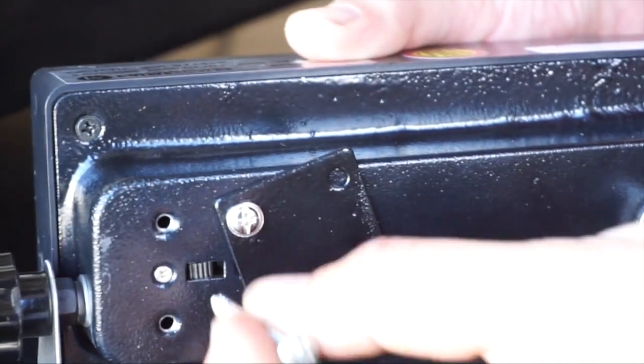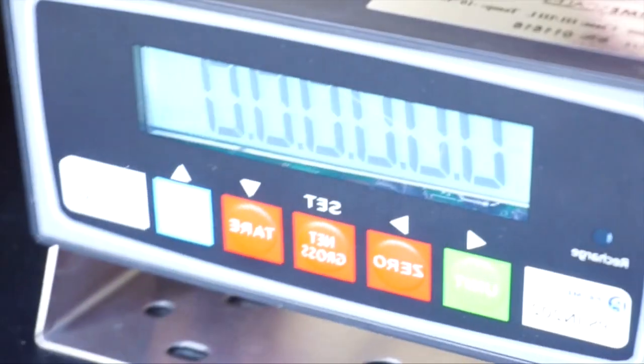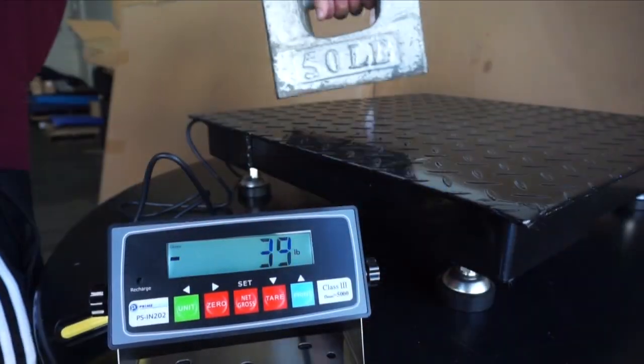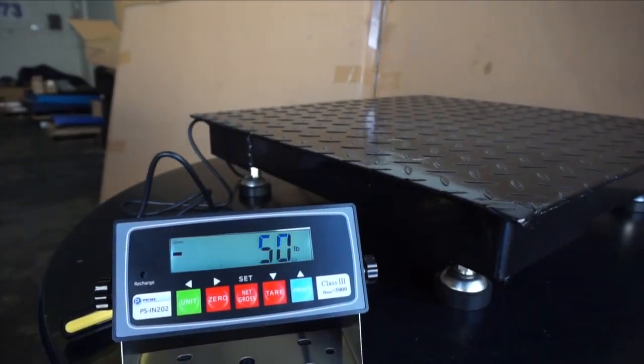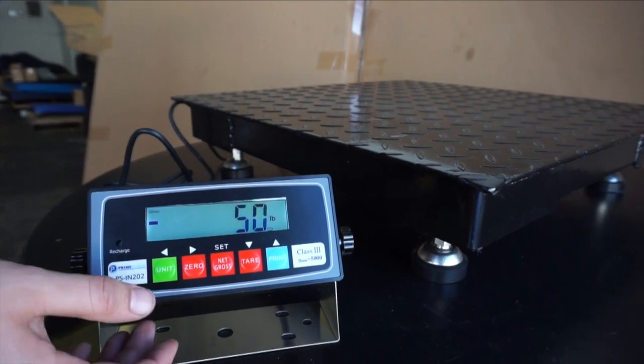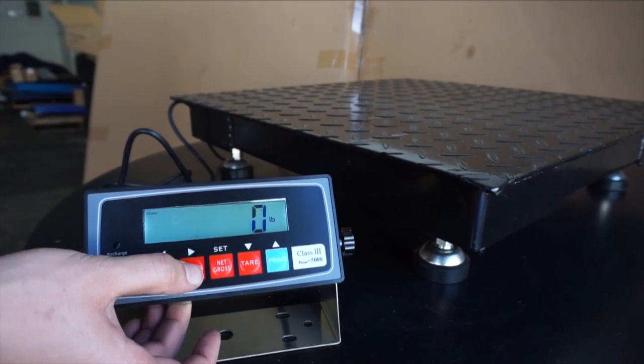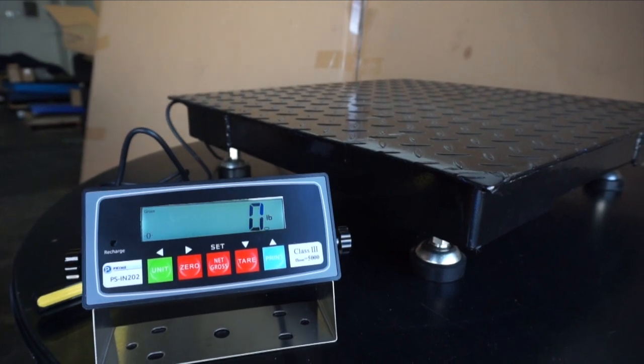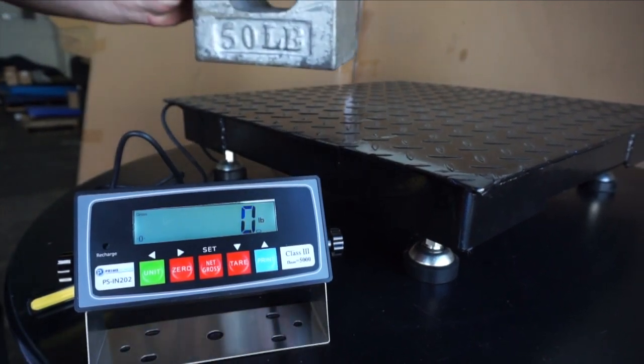Without removing the weight or turning off the indicator, flip the switch in the back of the indicator. You will hear and see the indicator do a countdown from 9 to 1. Remove weight and it should show minus 50 or the calibration weight you used. Press zero and place back the weight one more time.